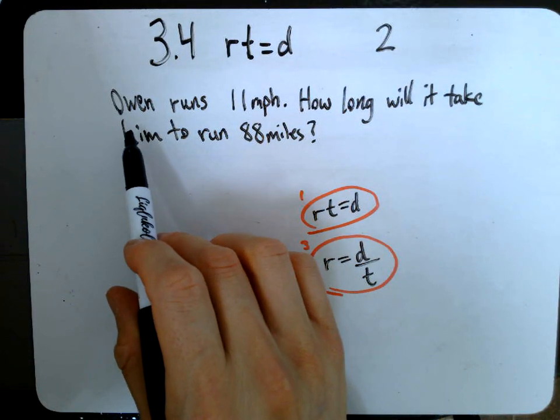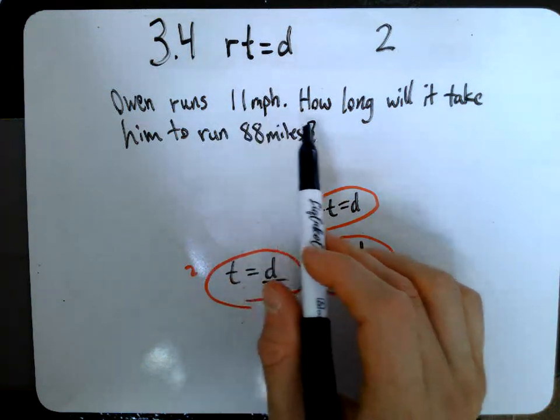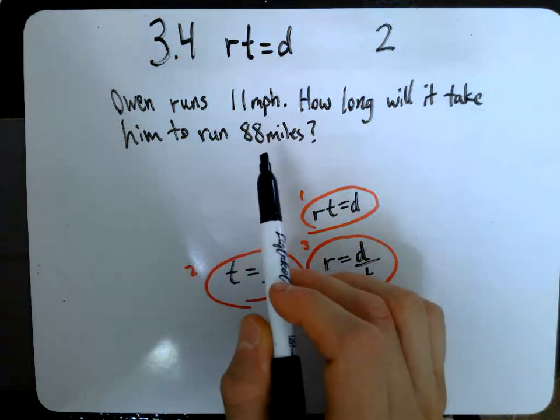Okay, part two. So we've got a sample problem here. Owen runs 11 miles per hour. How long will it take him to run 88 miles?